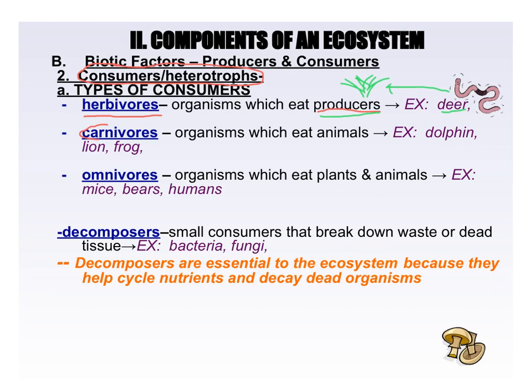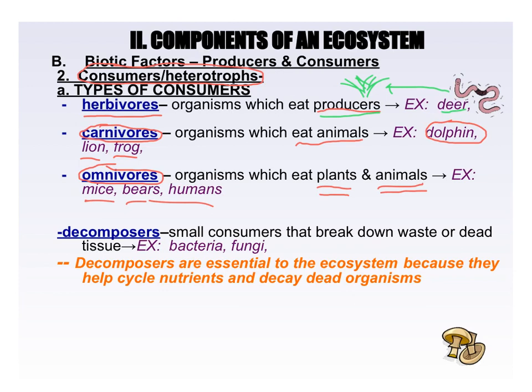The opposite of that are things like lions and wolves — they're called carnivores because they only eat other animals, only other heterotrophs. For example, dolphins don't eat plants; they eat fish. Lions eat other animals. Frogs eat insects; they do not eat plants. Then you have things like us, bears, and mice — we're omnivores because we eat both plants and animals, both producers and other heterotrophs.